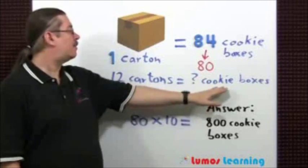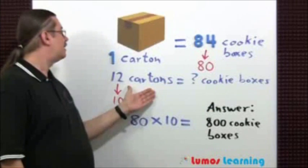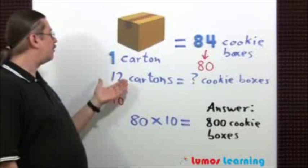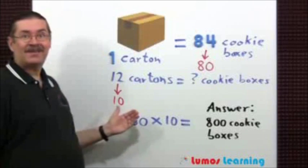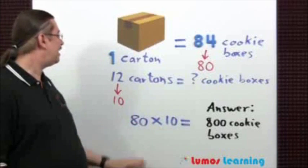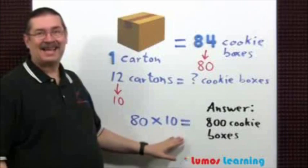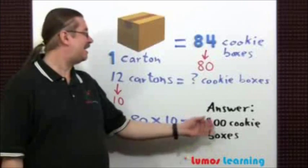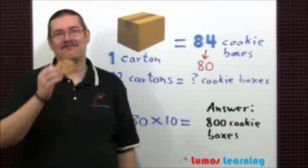To find out how many cookie boxes are in 12 cartons, let's round 12 to 10. Now all you have to do is multiply 80 times 10. The answer is 800 cookie boxes.